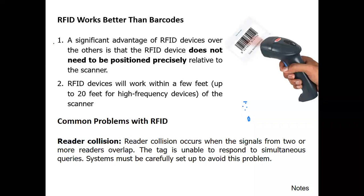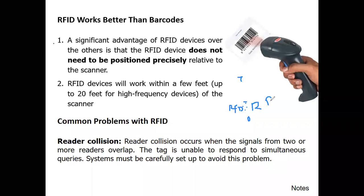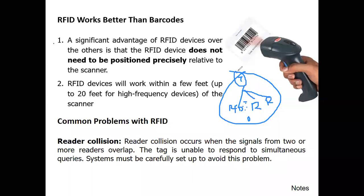There are problems in RFID. Number one is reader collision. Reader collision occurs when the signals from two or more readers overlap and the tag is unable to respond. If multiple readers are within range of one another, the tag cannot understand what to do and cannot respond to simultaneous queries. The system must be carefully set up to avoid this problem.